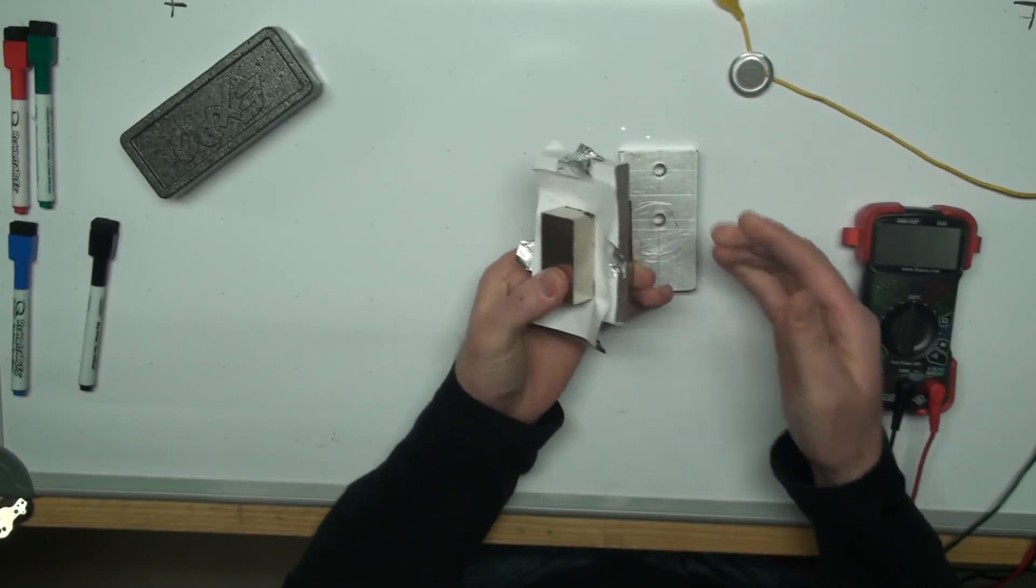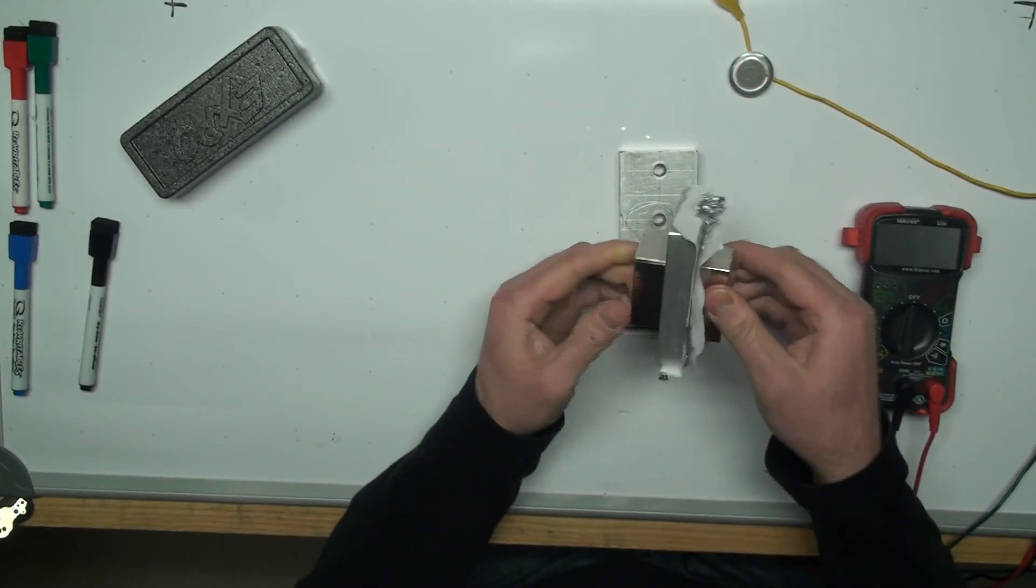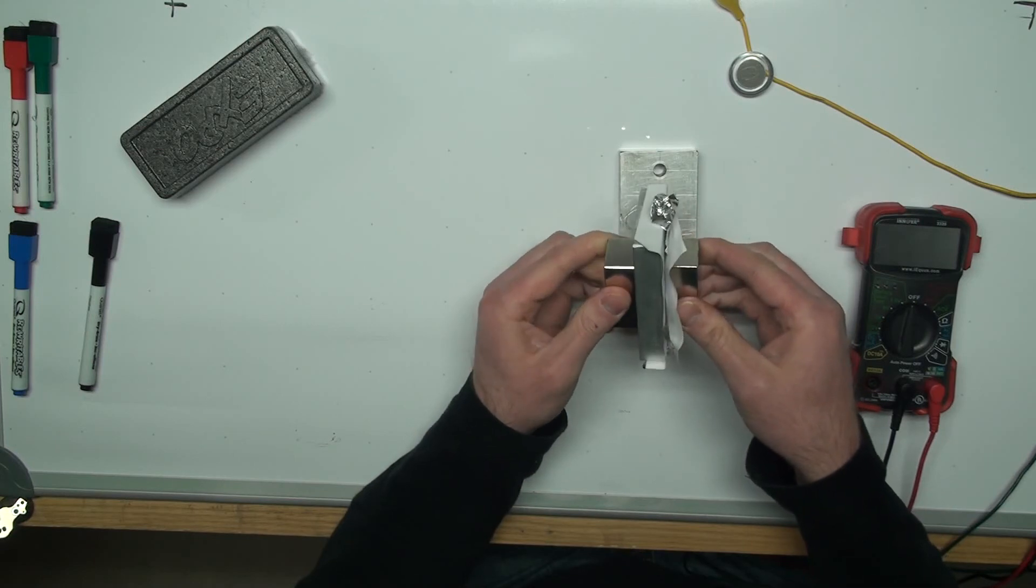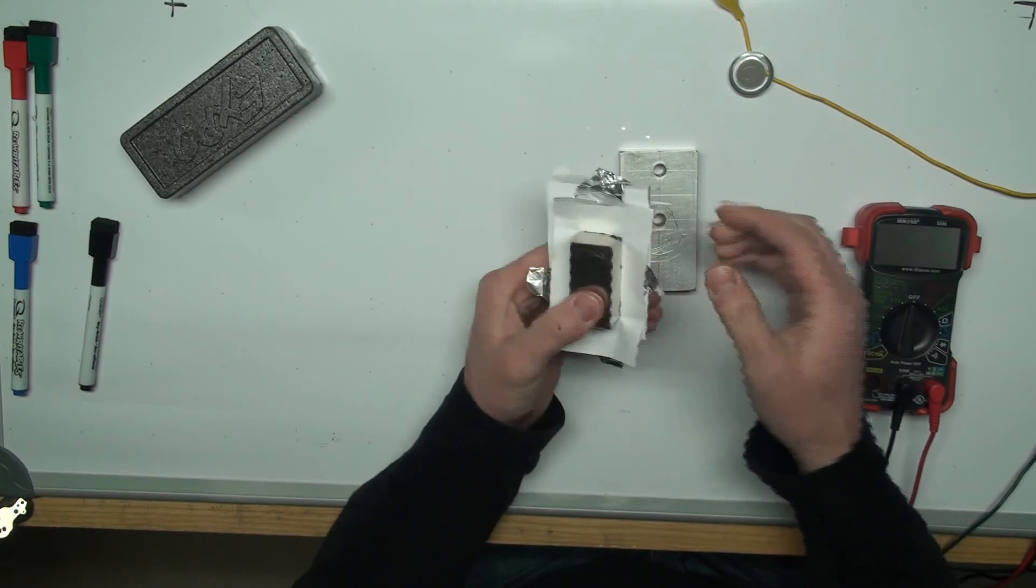Now mind you, this is not a practical sensor. It's way too big. These are very strong magnets. And to make it more practical, you would use something like an op-amp.